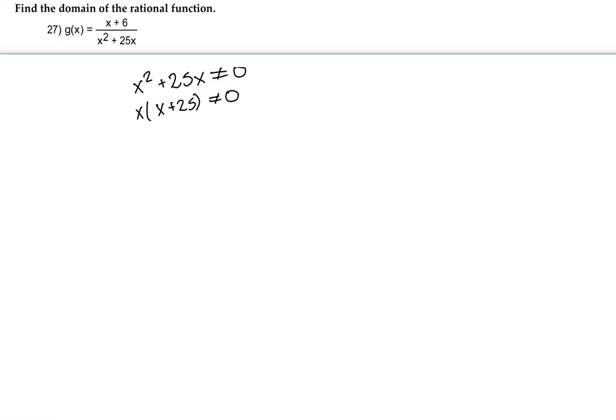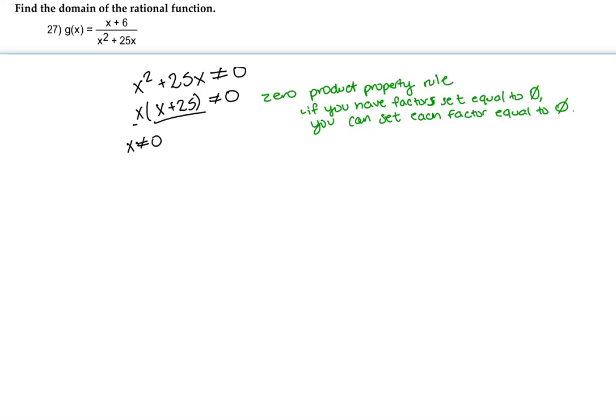Now I'm going to use the zero product property rule, which states that if you have the factors set equal to 0, you can set each factor equal to 0. So my x can't be 0, and my x plus 25 can't be 0. So my x cannot equal negative 25.